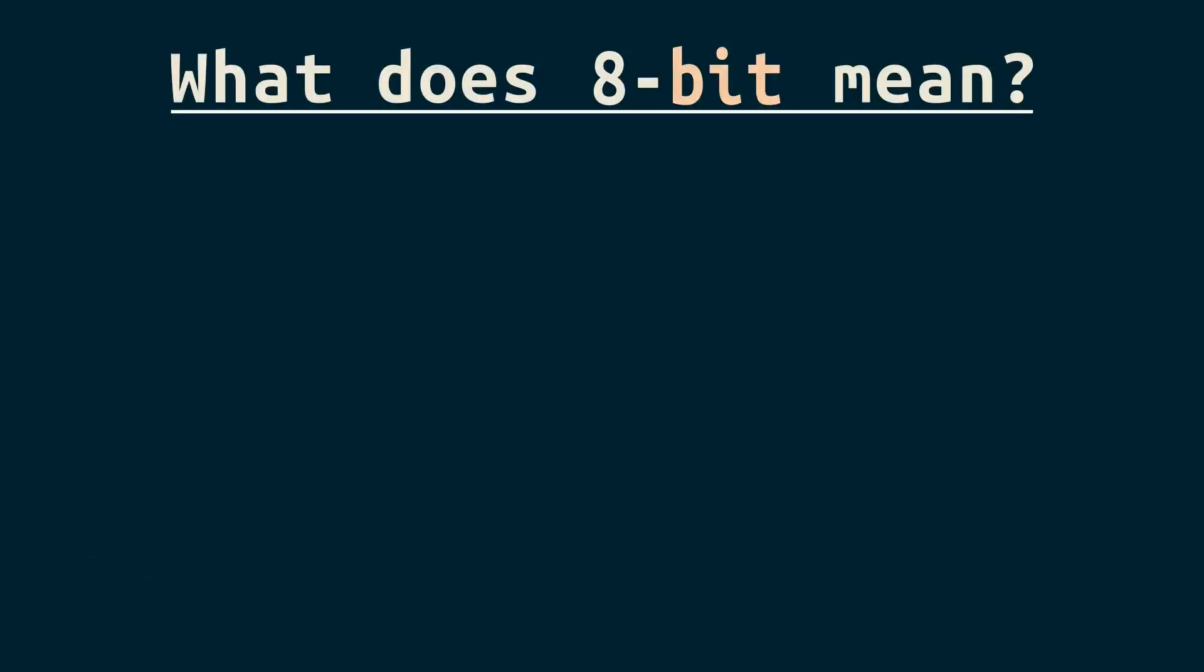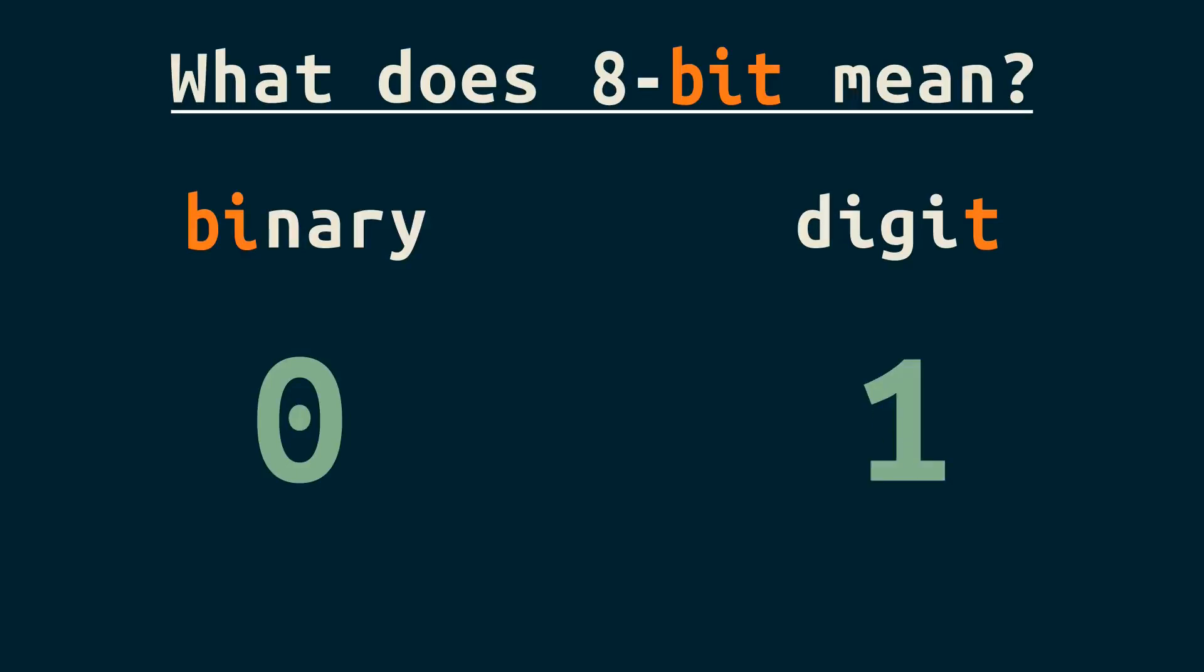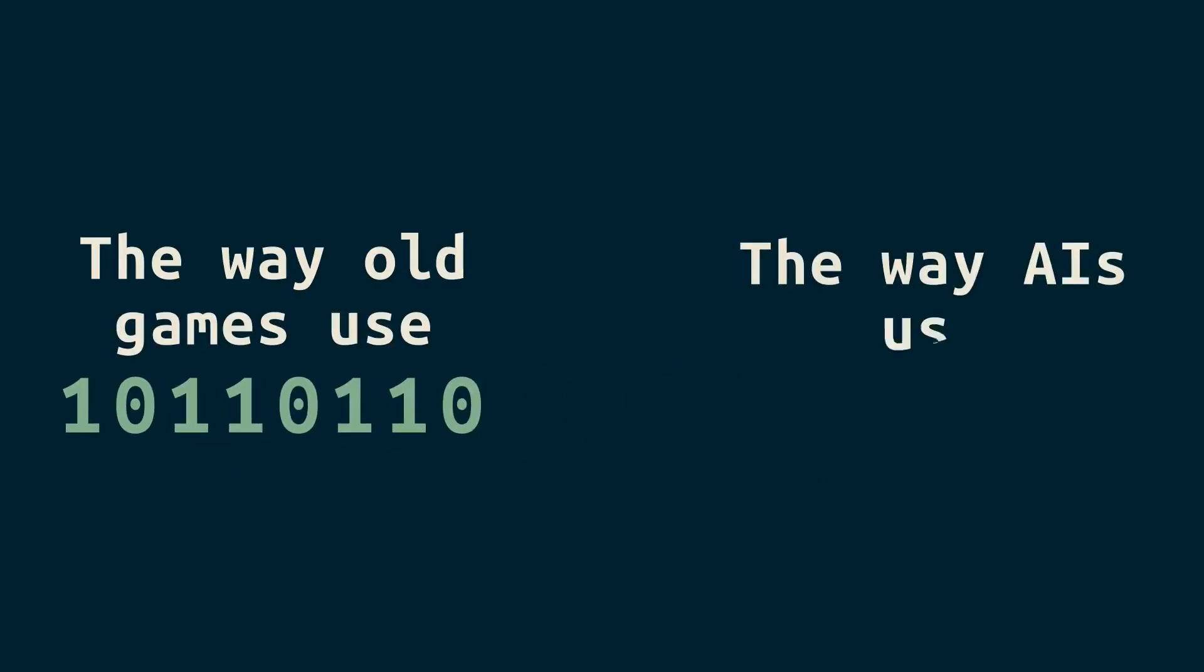First things first, a bit is a binary digit, 0 or 1. An 8-bit number just has 8 of these. But the way old video games and AI systems use 8-bit numbers isn't really the same.